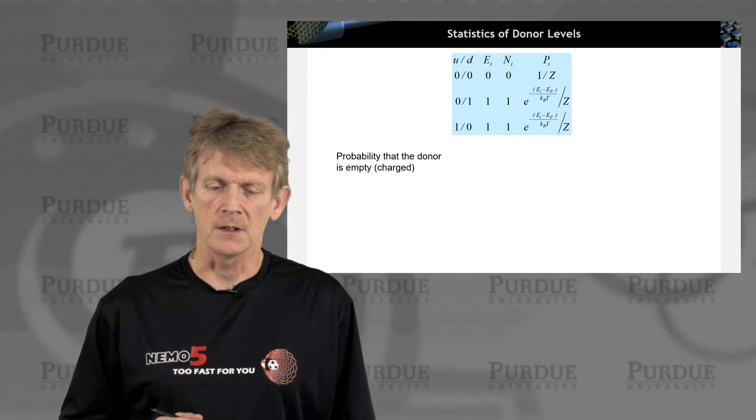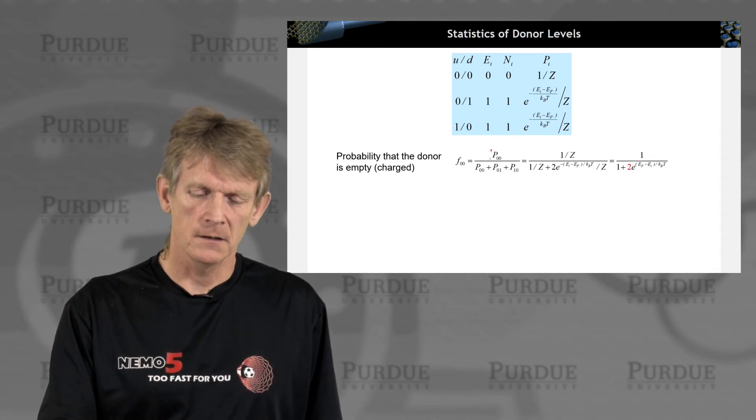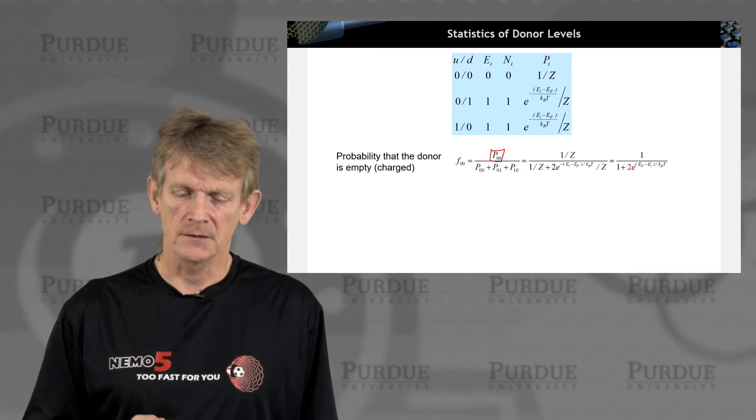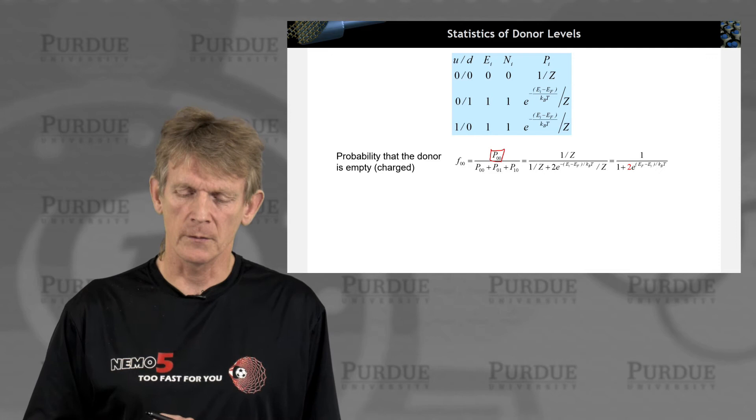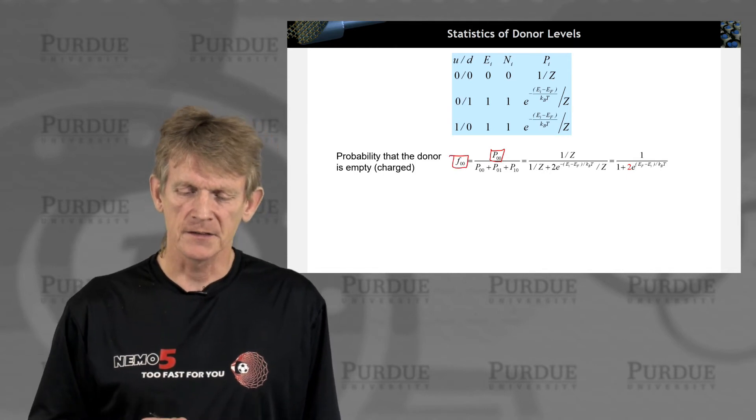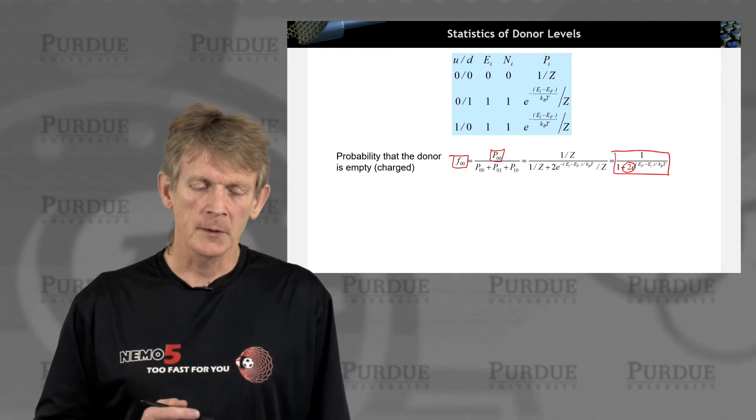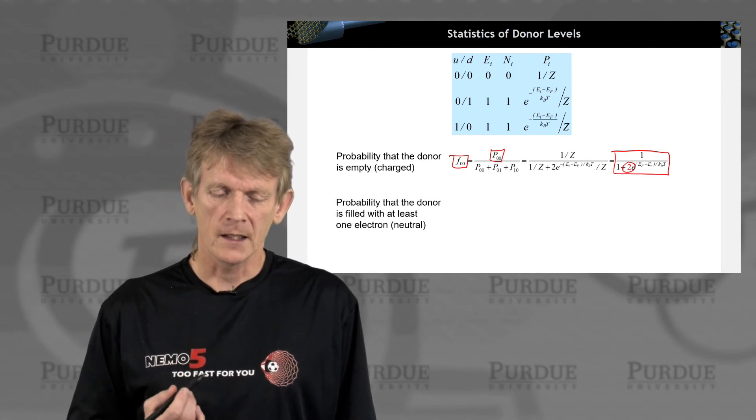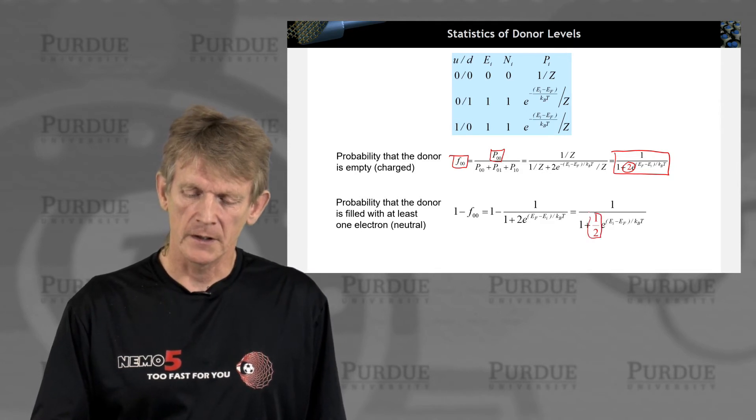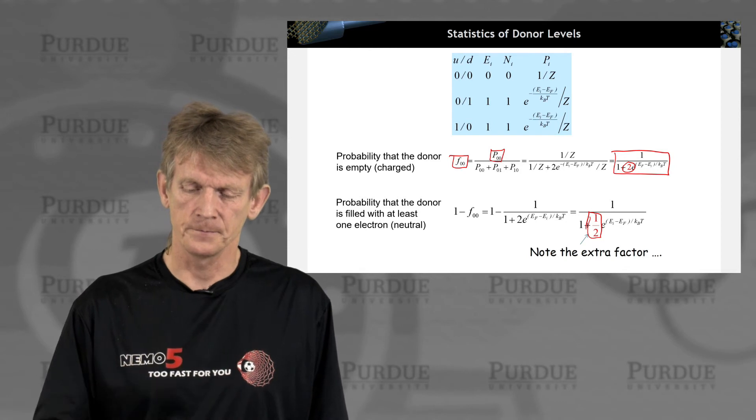So what's the probability that a donor is empty, i.e. it's a charged donor? The probability is the occupation, the probability of finding the 0,0 state, divided by the probability of all the states. So you plug in these expressions here, including the partition function z, and you find that the probability of finding a donor that is empty is similar looking to the Fermi distribution, but it has this factor of 2 in it. Now, what's the probability of a donor containing one electron, at least one electron? That is 1 minus f0, and you'll find that there's a coefficient 1 half here in this distribution function. So you just carry through a partition function calculation of a probability of a certain state.